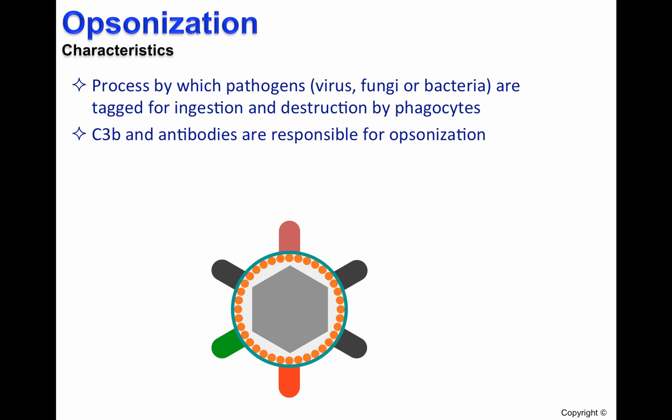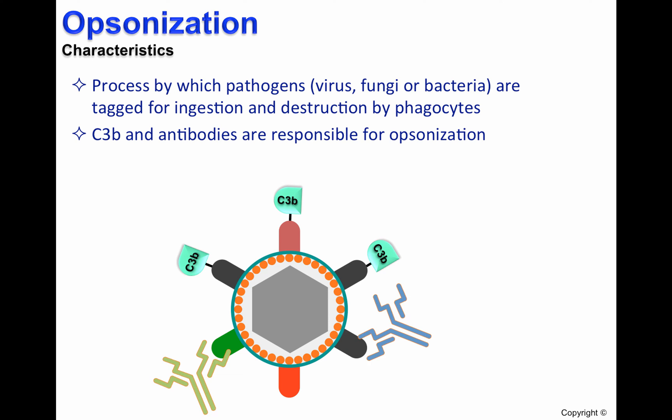The most important tags or molecules responsible for opsonization are C3B, due to complement activation as covered in previous videos, and antibodies, which are molecules that are produced by B-cells that recognize different antigens.